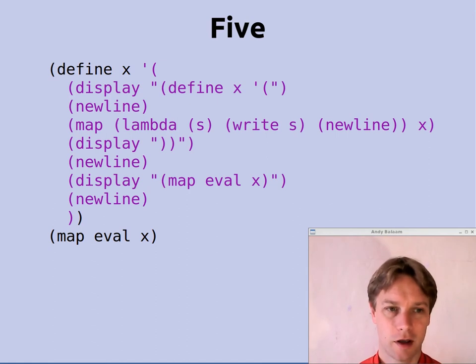So what this program does is it defines a thing called X, which is this whole quoted value. And then at the end of the program, it does this map eval X, which basically means for all of the lines in X, because that consists of a number of lines of code, evaluate those lines, as in run that bit of code.